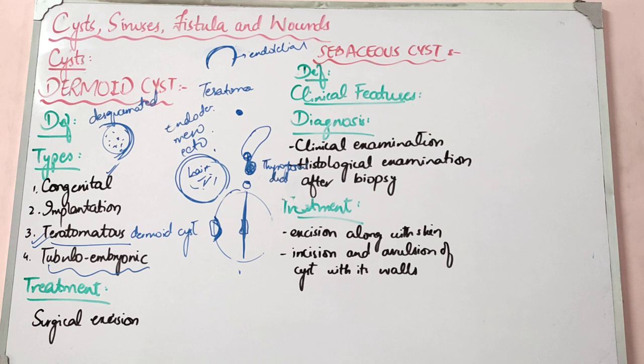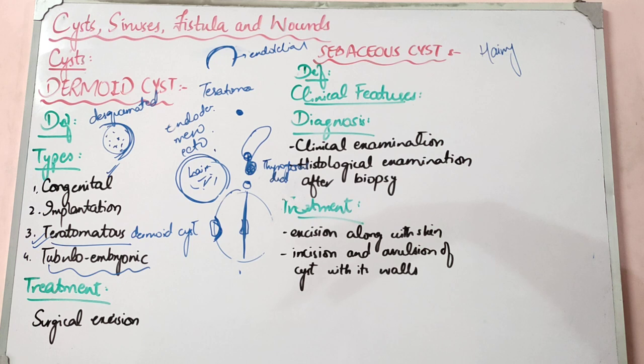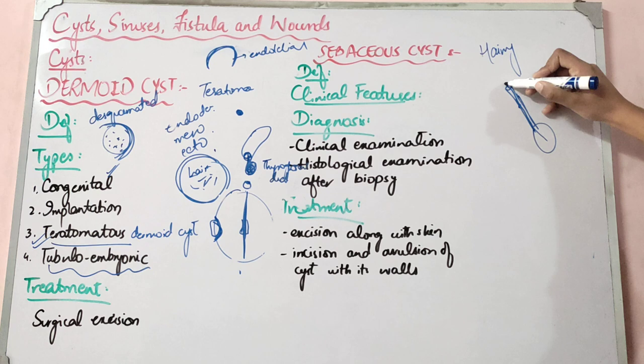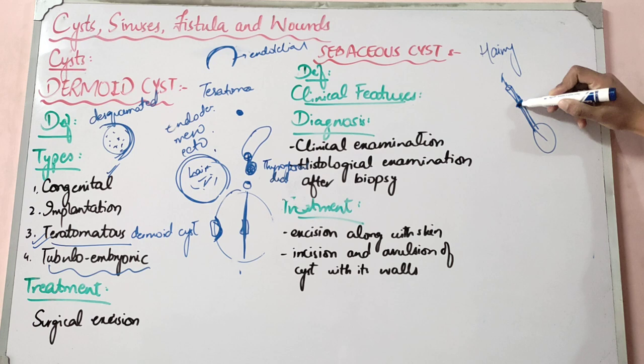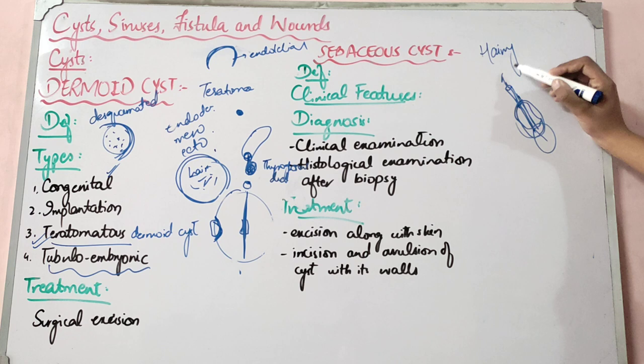Sebaceous cysts are found in hairy areas. Sebaceous glands produce sebum, and are found in areas like the axillary area and groin area. If the sebaceous duct is blocked — the duct that carries sebum from the gland to the skin surface through the punctum — the sebum accumulates and a cyst forms. This is called a sebaceous cyst, arising from the skin duct.